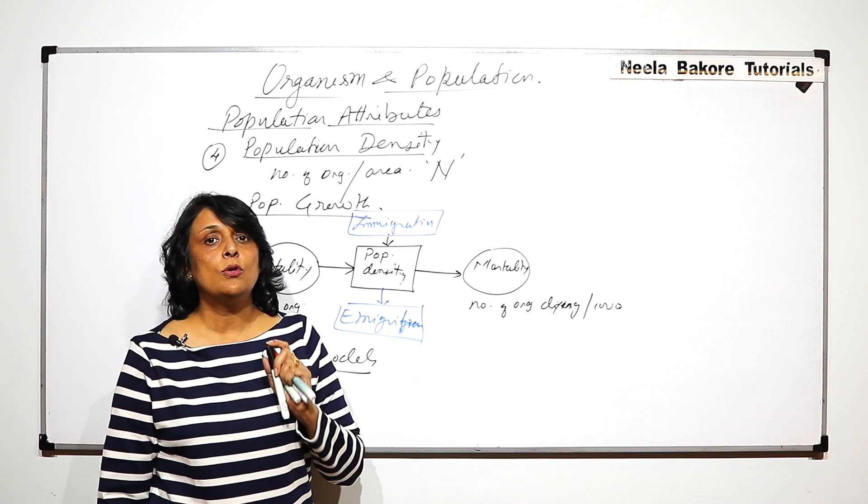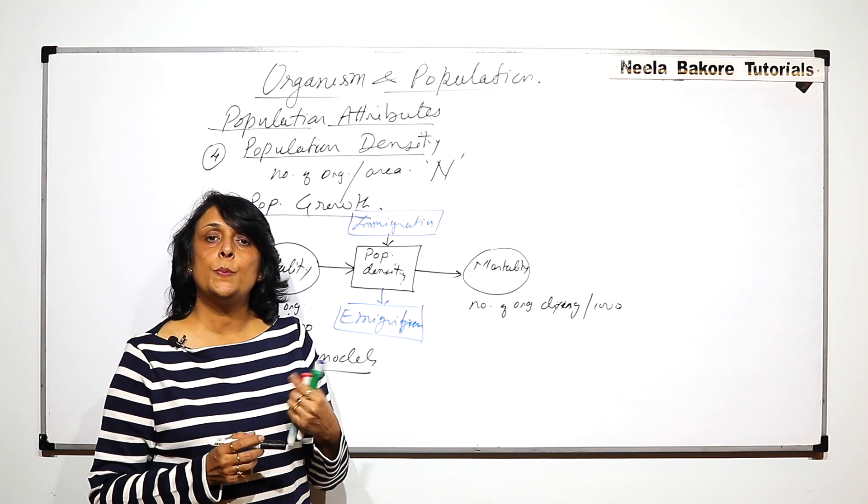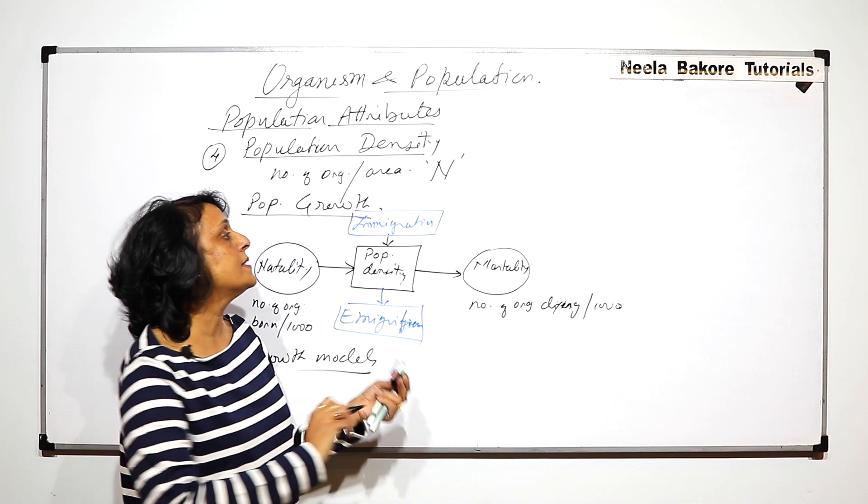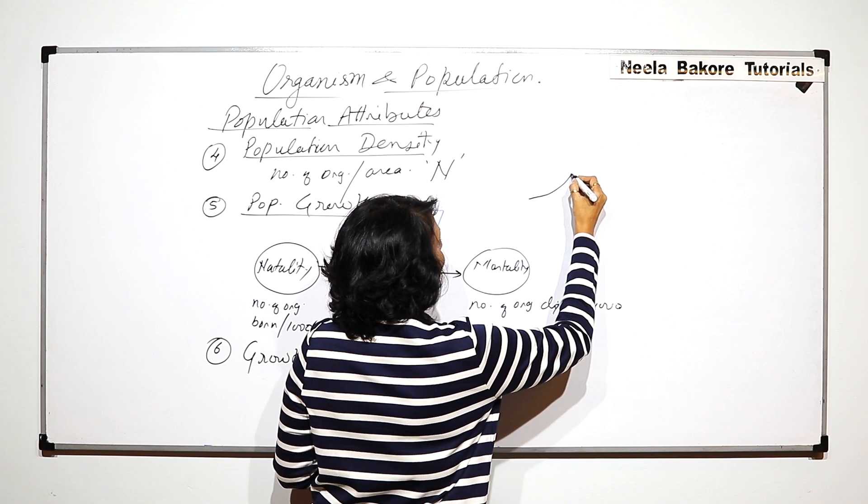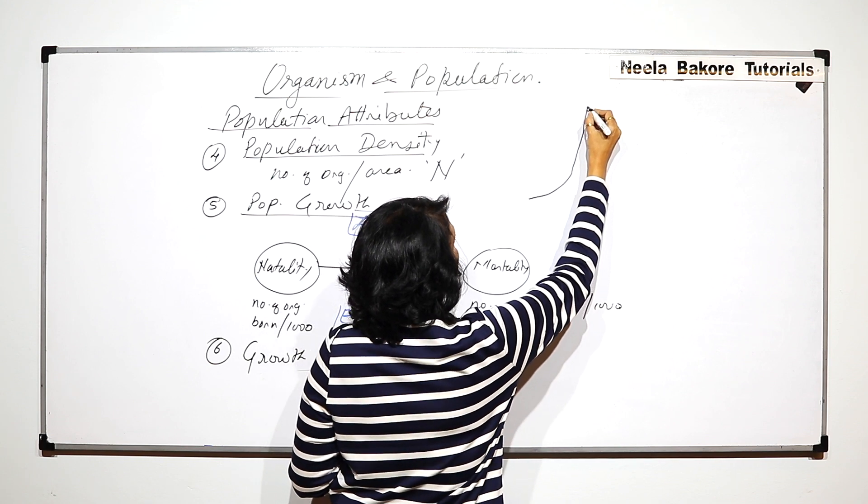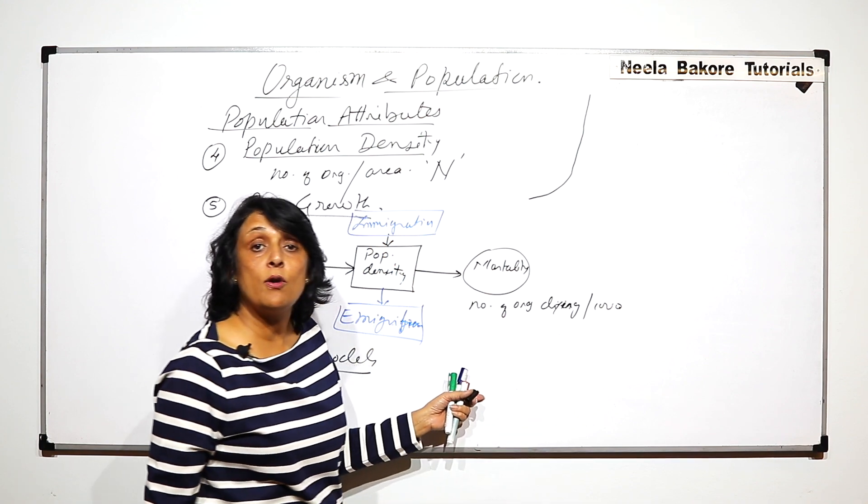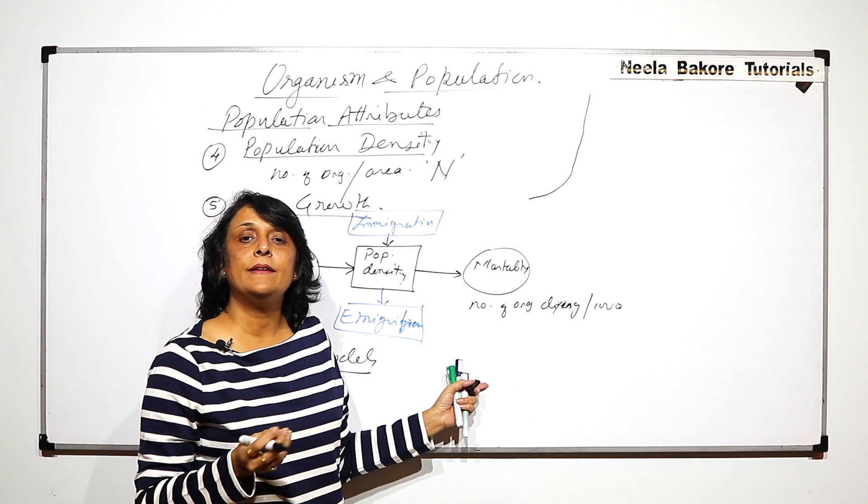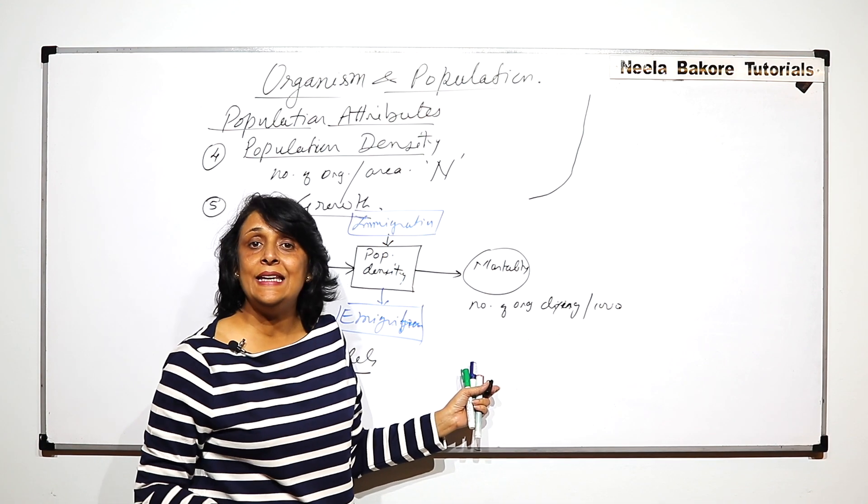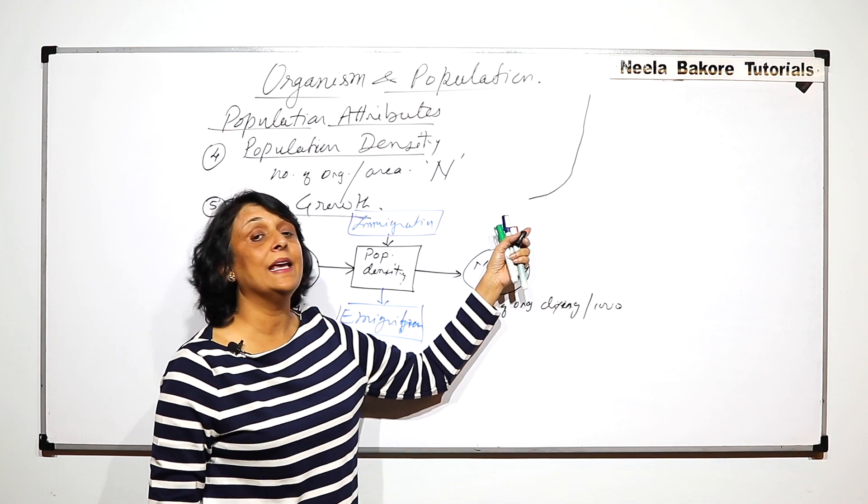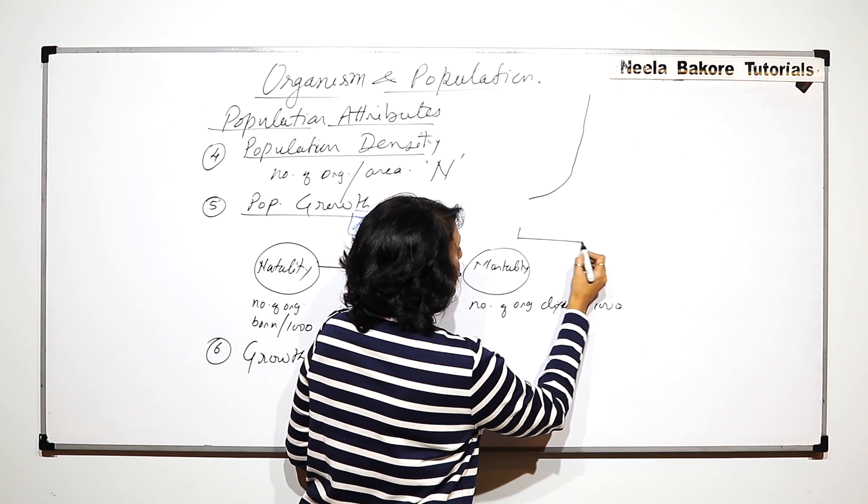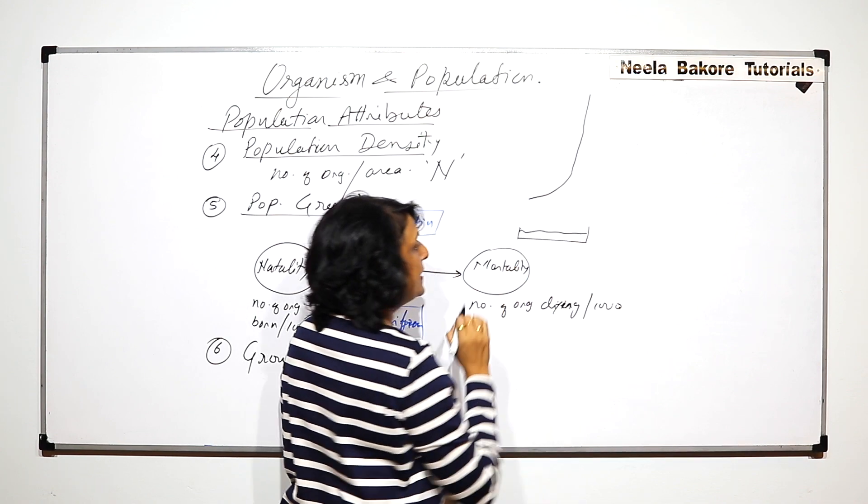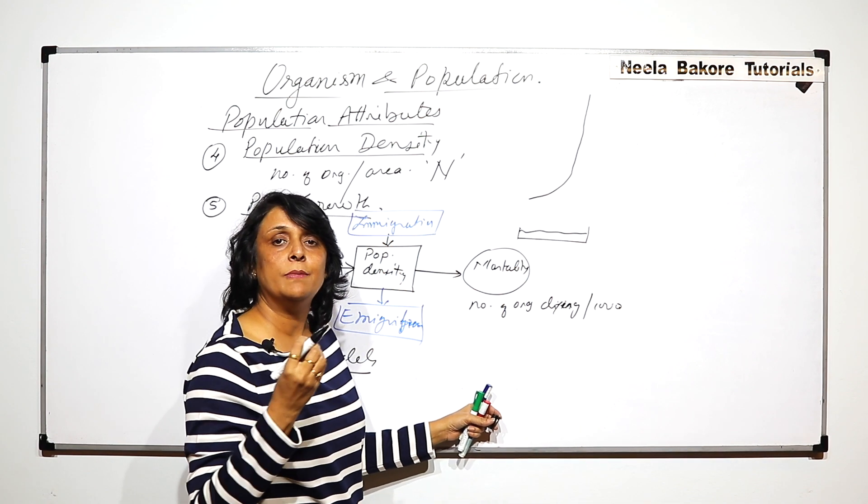Then the growth model or the growth pattern which we would see is initially there would be a slow increase, and then the population would just go on increasing because we are supplying them all what they need. Initially there is a petri dish where we provide a nutritive medium and we bring in some microbes, and that is why the graph is a little lower.